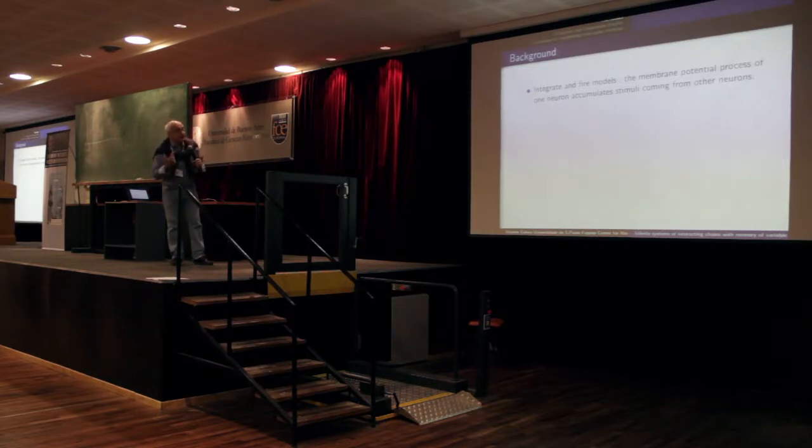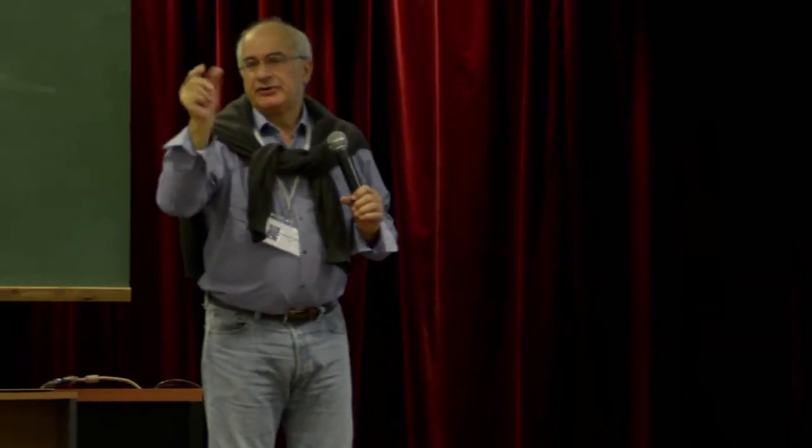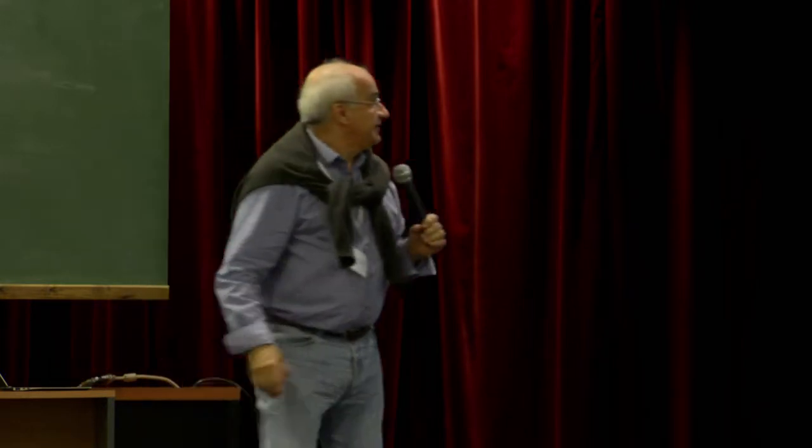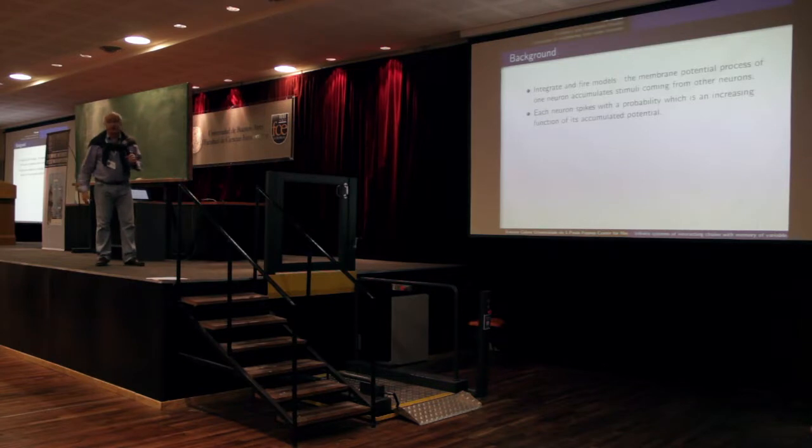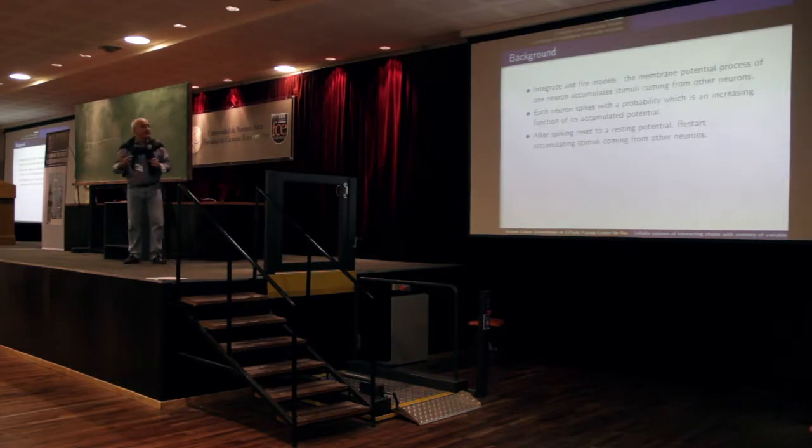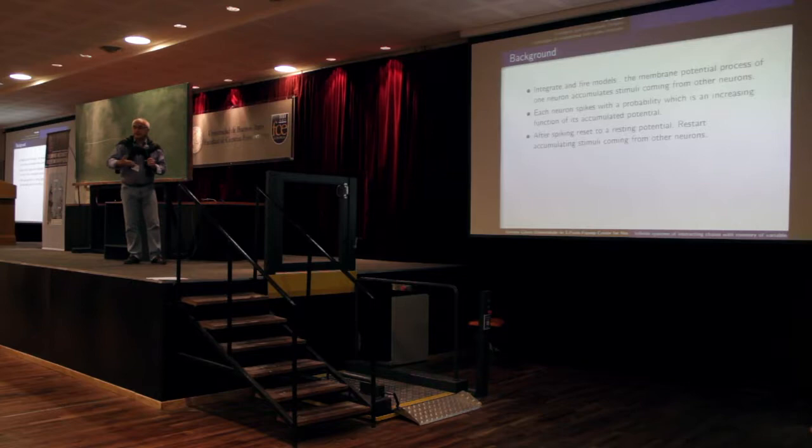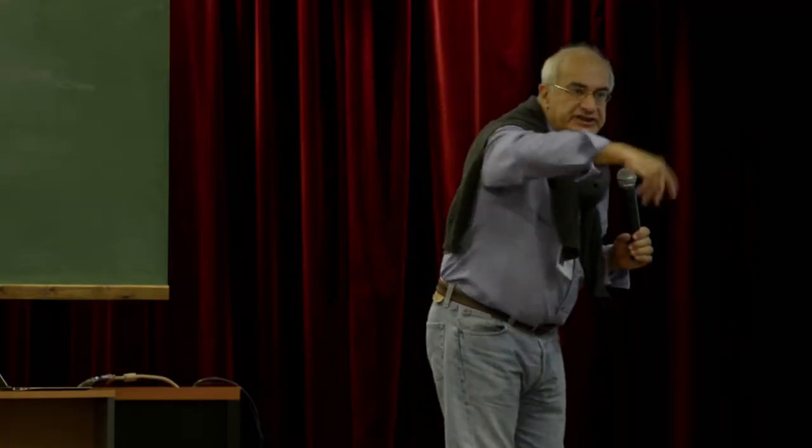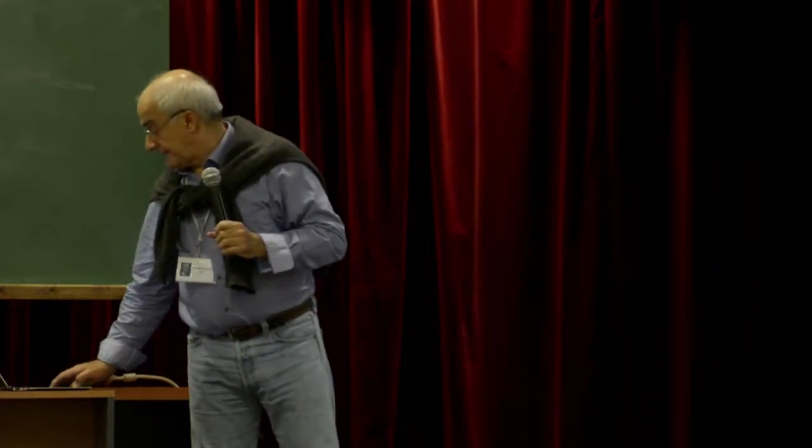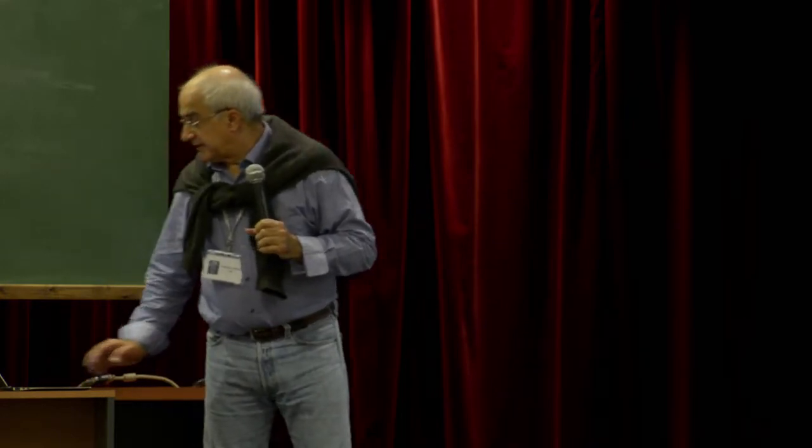So let me describe it. The membrane potential process of one neuron accumulates stimuli. I'm using stimulus in a very loose way. I want to say difference of potential. Each neuron spikes with probability which is an increasing function of its accumulated potential. And after spiking, it resets its membrane potential to zero, to minus. Let's put zero. It's not zero, it's something negative, but let's put zero. And we start receiving stimuli.